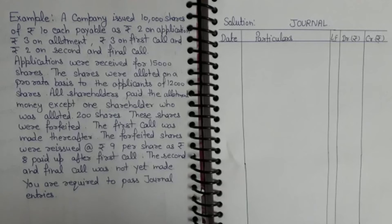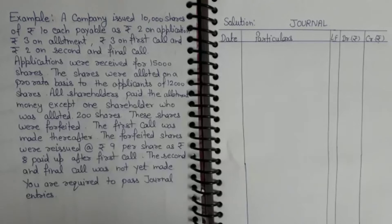यहाँ पे oversubscription हो गया — 10,000 के लिए application invite किया और 15,000 की application money receive हुई। The shares were allotted on a pro-rata basis to the applicants of 12,000. 12,000 को pro-rata basis पर allot किया, यानि 3,000 को amount return कर दिया। उसके बाद forfeiture हुई। The first call was made thereafter. The forfeited shares were re-issued at ₹9 per share as ₹8 paid up after first call. The second and final call was not yet made. We are required to pass journal entries.